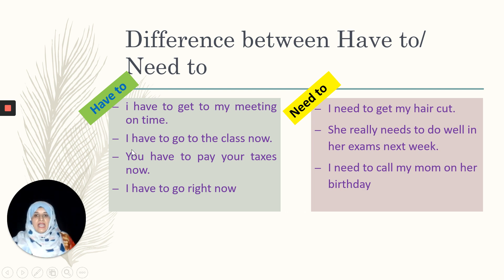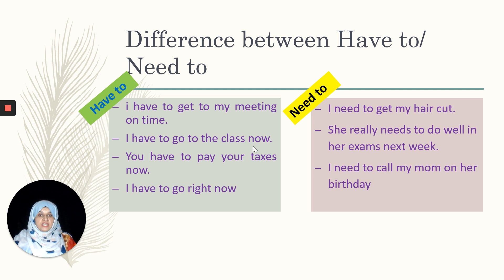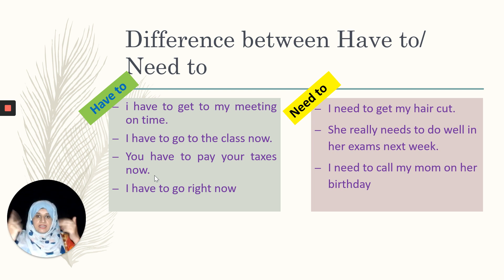Second example of 'have to': I have to go to class now. If I don't go, I can miss the class, face attendance issues, be scolded by my teacher, or miss the lecture. So I'm thinking about all the problems associated with missing class. Next example: you have to pay your taxes now. Again, I am focused on the problem — if I don't pay taxes, I can face legal or other consequences.